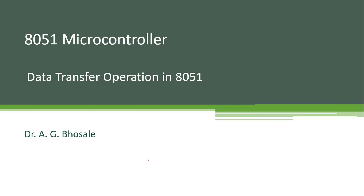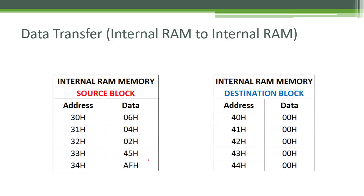Welcome. In this video we are going to see the data transfer operation in 8051. We are going to copy the data from one internal RAM memory location to another internal RAM memory location. We have considered two blocks: the source block and the destination block. The source block has addresses from 30H to 34H, whereas the destination block has addresses from 40H to 44H.